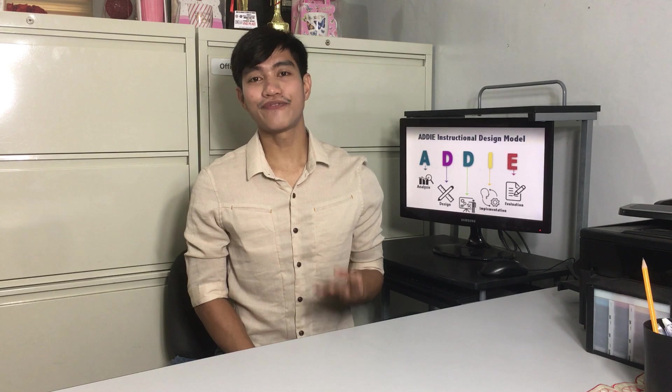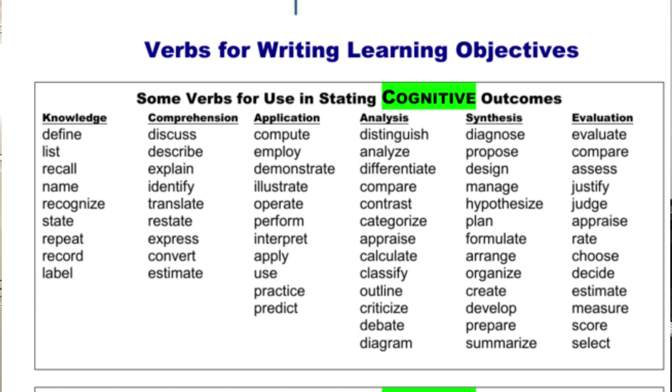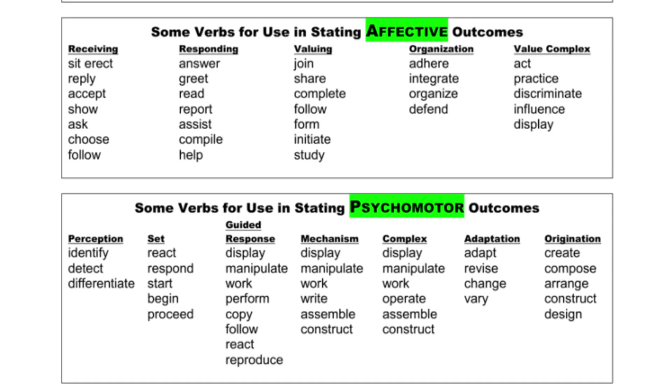Understand, know, learn, and appreciate do not specify any overt doing. Although knowing and understanding underpin learning, objectives are always written using active doing verbs. They are statements of what you want your learners to do. There are lists and tables containing examples of active verbs which describe what you want students to be able to do, and these may help you write useful learning objectives.